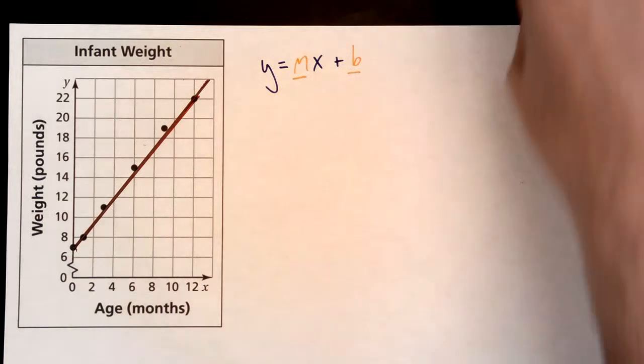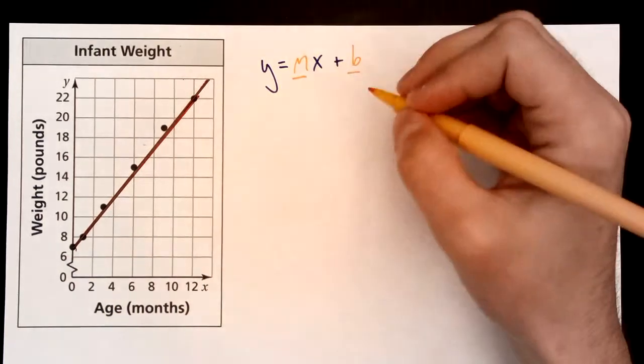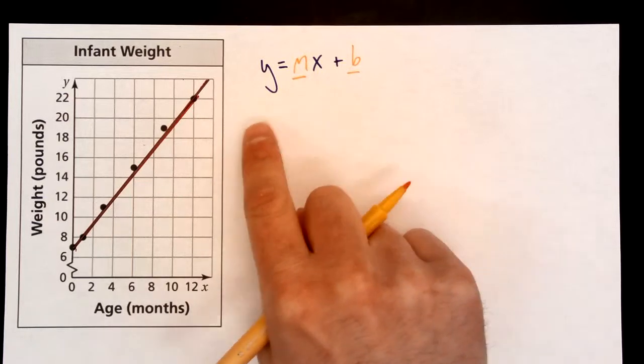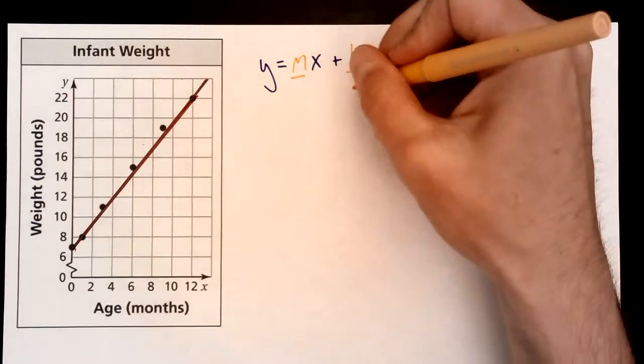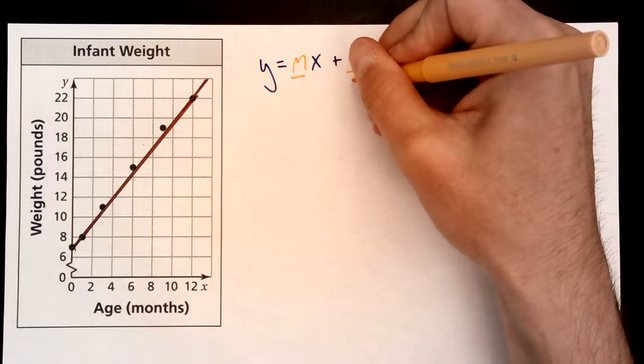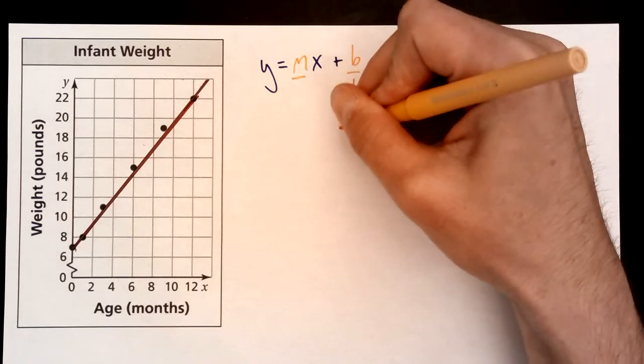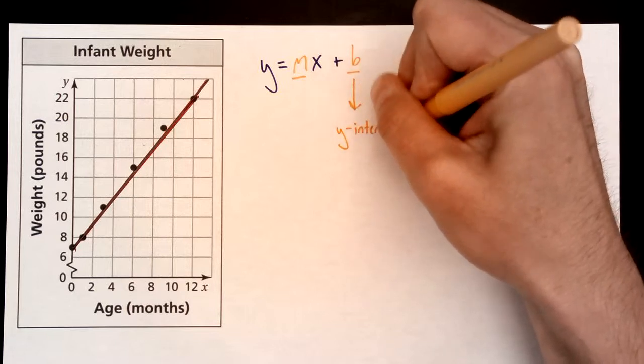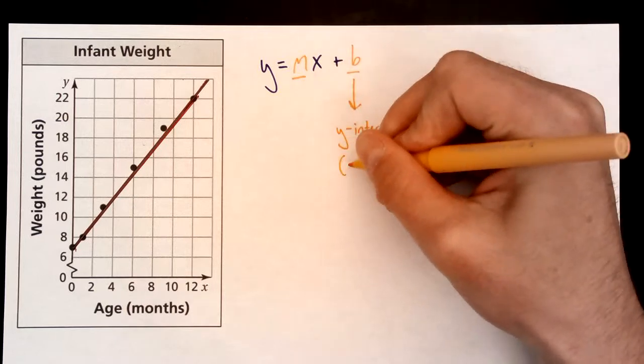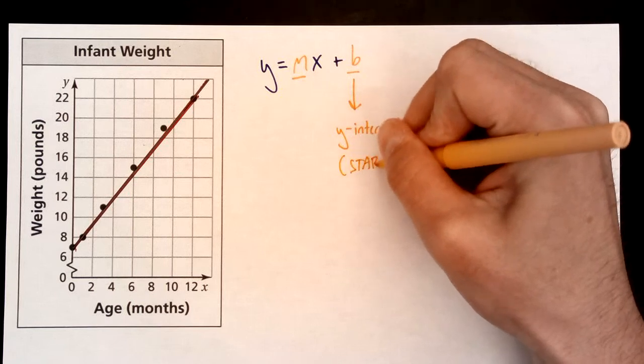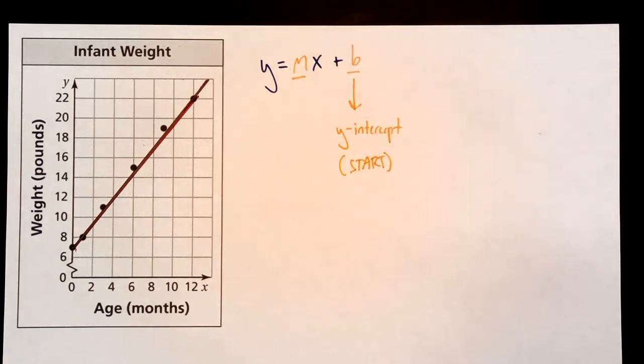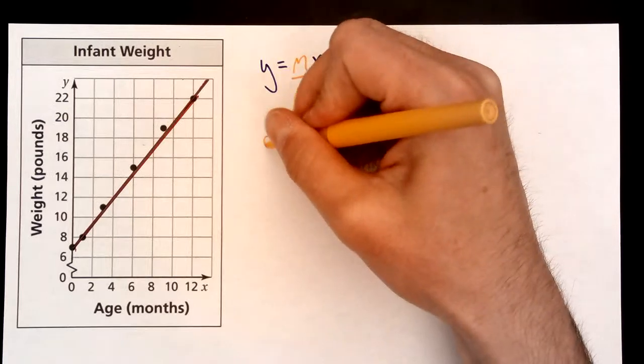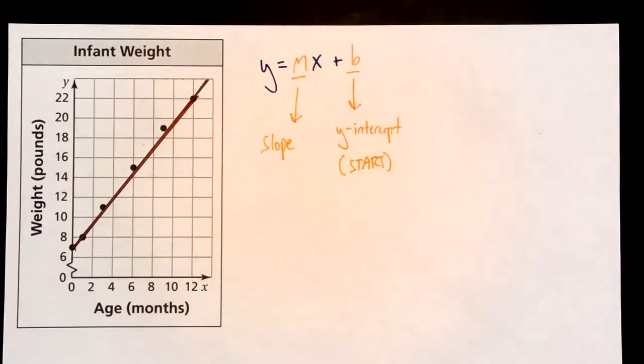Now I need two things. In order to write an equation, I can use this slope-intercept form template: y equals mx plus b. And I only need two things. I need this b value, which is known as the y-intercept. It's also known as the start. I call it the start. The second thing I'm going to need is this thing called the slope, which measures the steepness of the line.